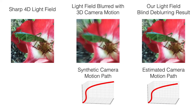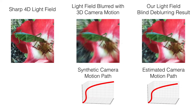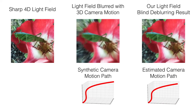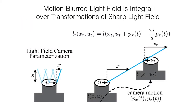In this work, we study the problem of de-blurring light fields of general 3D scenes captured with 3D camera motion and present both theoretical and practical contributions. We visualize light fields by animating the viewpoint changes between sub-aperture images. We derive a forward model that describes a motion-blurred light field as an integration over transformations of the original sharp light field along the camera motion path.